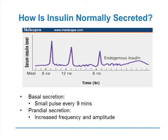How is insulin normally secreted? All of us produce a little burst of insulin every nine minutes. That's how we secrete insulin — this is a constant background level of insulin. When we eat, the amplitude of the pulse and the frequency of the pulse increases, thereby giving us a phasic increase in the meal-associated insulin. That's how we normally secrete insulin.